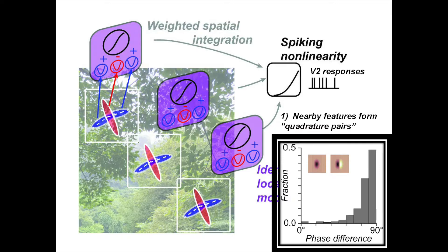As I mentioned, quadrature pairing is the signature of complex cells projecting from V1 to V2. When we have filters of the same size and orientation but differing in the phase of the sinusoid through the Gaussian — if the phase difference is 90 degrees, that's a perfect quadrature pair. Looking at the distribution across different features, we see it is strongly biased towards 90 degrees. This simplifies the complexity of features from 14 to seven feature pairs.